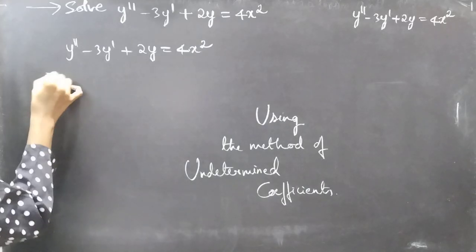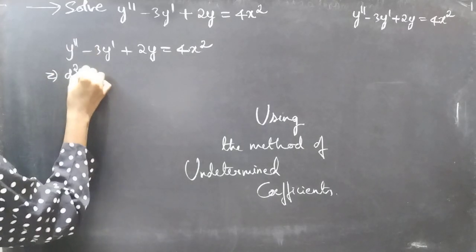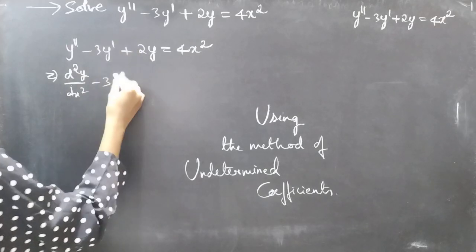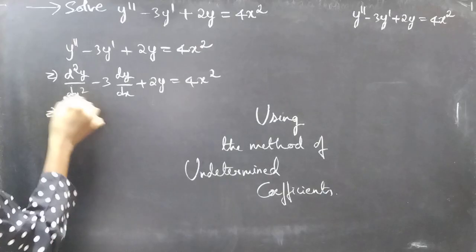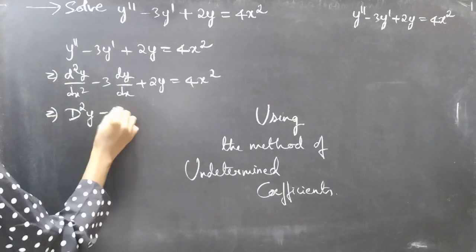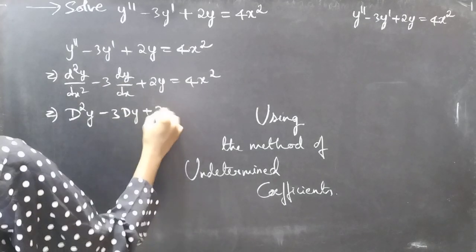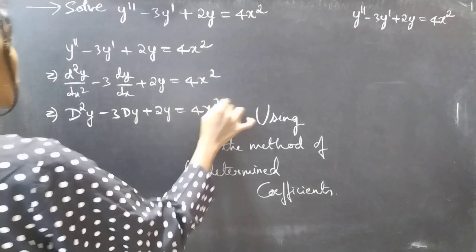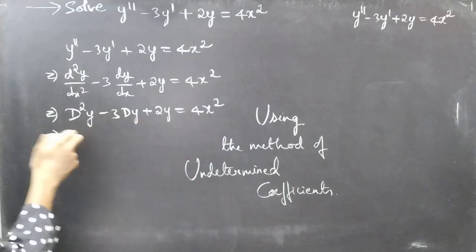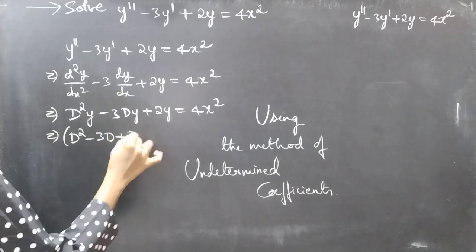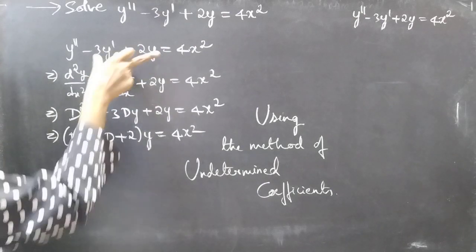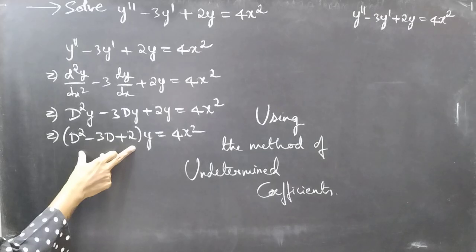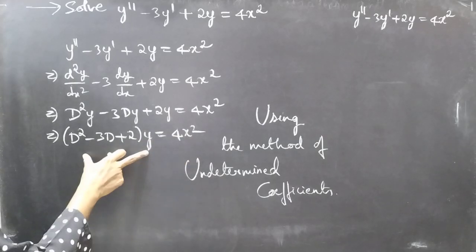In operator form, we can write y'' as d²y/dx², minus 3 times dy/dx, plus 2y equals 4x². We can also write d²y/dx² as D²y minus 3·Dy plus 2y = 4x². Taking y common from all three terms, we get (D² - 3D + 2)y = 4x², which is the operator form: f(D)·y = Q(x).